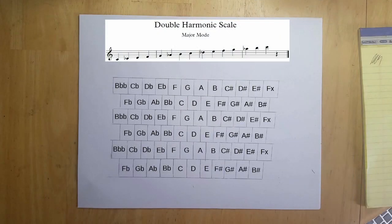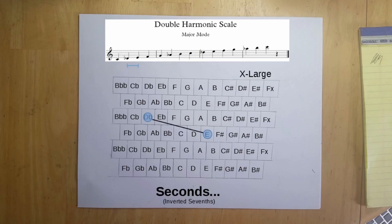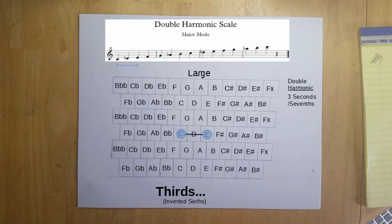For example, the double harmonic scale has three sizes of 2nd and 7th, three sizes of 3rd and 6th, and three sizes of 4th and 5th.